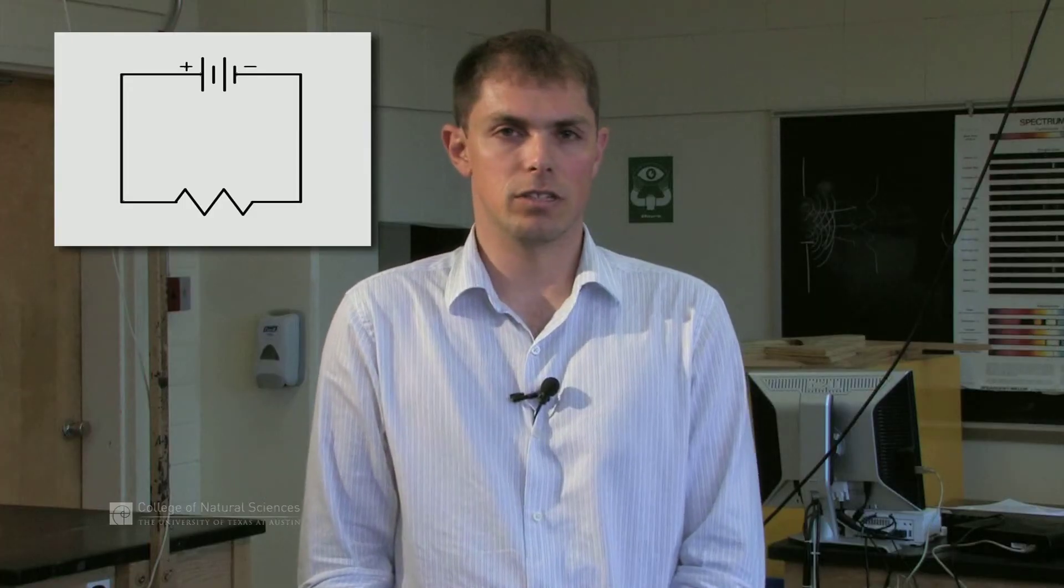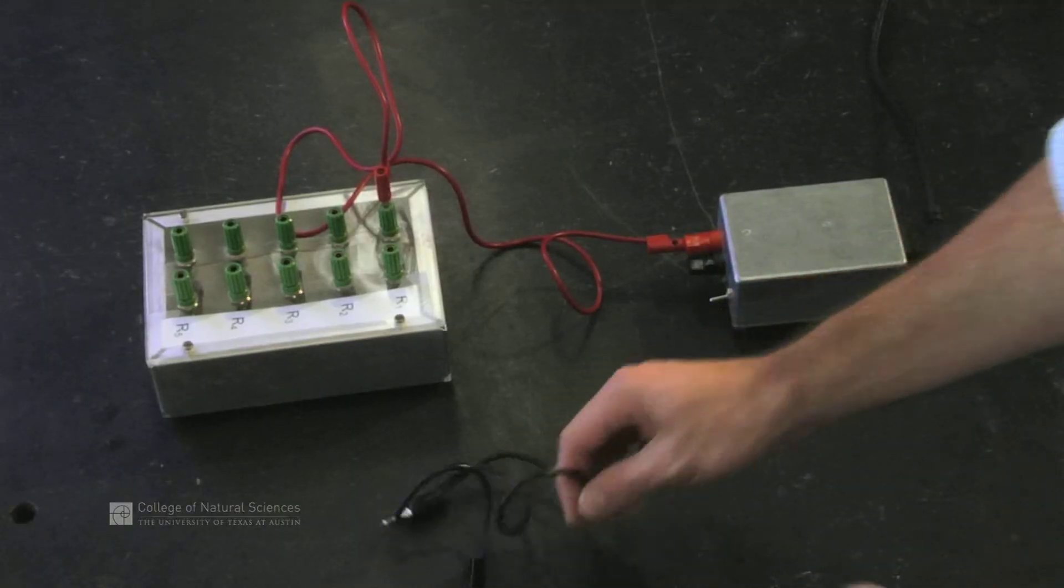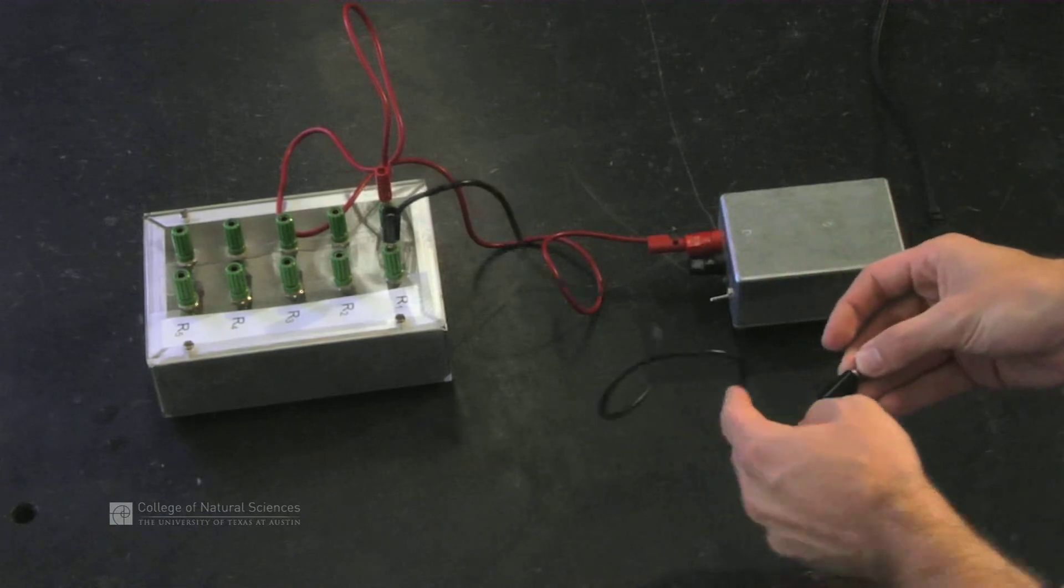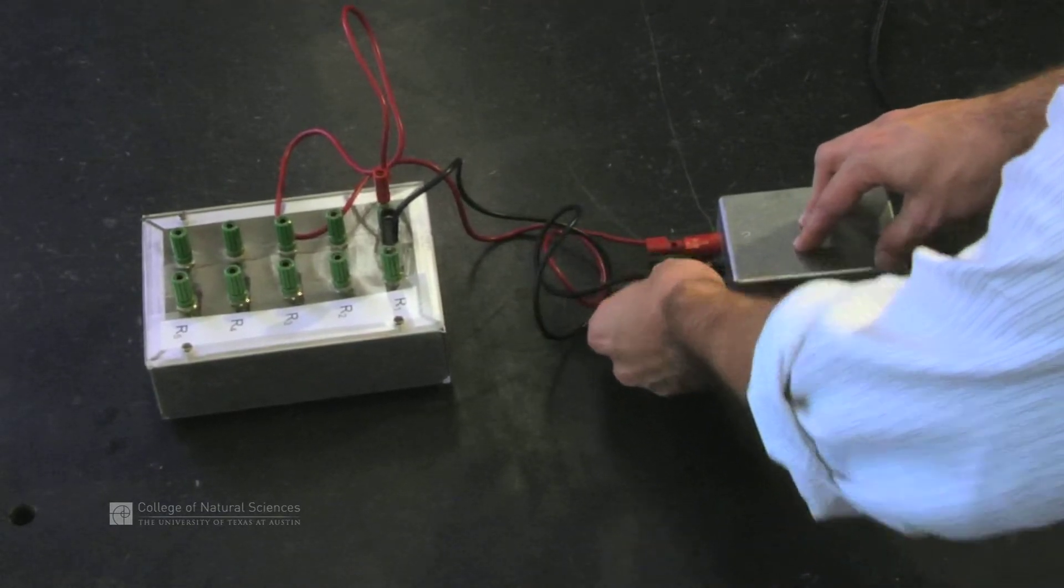If we follow the loop around, we can see that the resistor is connected to a second wire. That second wire then is connected back to the negative terminal of the power supply.